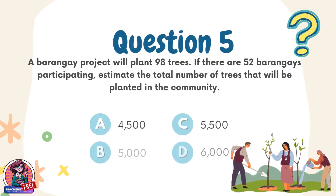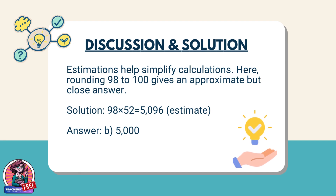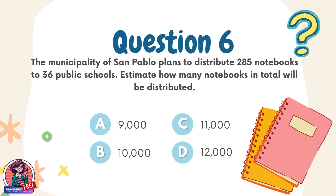Question 5. A barangay project will plant 98 trees. If there are 52 barangays participating, estimate the total number of trees that will be planted in the community. Choices: A. 4,500, B. 5,000, C. 5,500, D. 6,000. Discussion: Estimations help simplify calculations. Here, rounding 98 to 100 gives an approximate but close answer. Solution: 98 × 52 = 5,096. Estimate: B. 5,000.